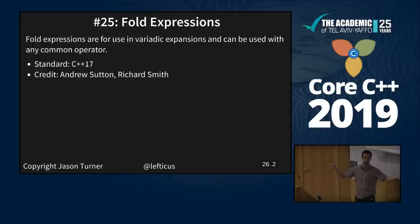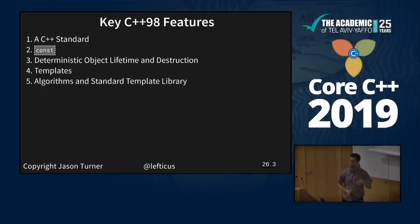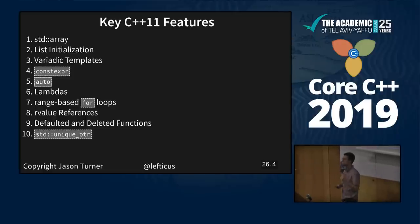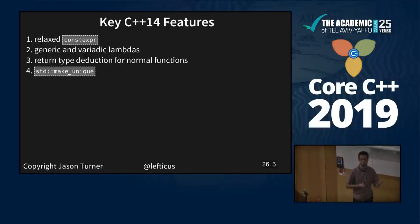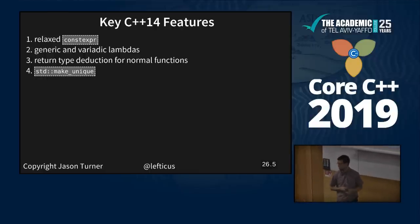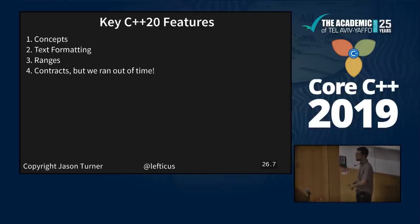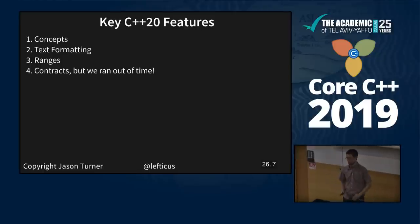Summary of the 25 features. C++98: standard, const, deterministic object lifetime and destruction, templates, algorithms and STL. C++11: standard array, list initialization, variadic templates, constexpr, auto, lambdas, range-based for loops, rvalue references, defaulted and deleted functions, unique_ptr. C++14 fixed many little issues with C++11: relaxed constexpr, generic and variadic lambdas, return type deduction for normal functions, make_unique. C++17: structured bindings, string_view, CTAD, guaranteed copy elision, fold expressions. C++20: concepts, hopefully text formatting, ranges — and contracts, sorry, we ran out of time to talk about contracts.